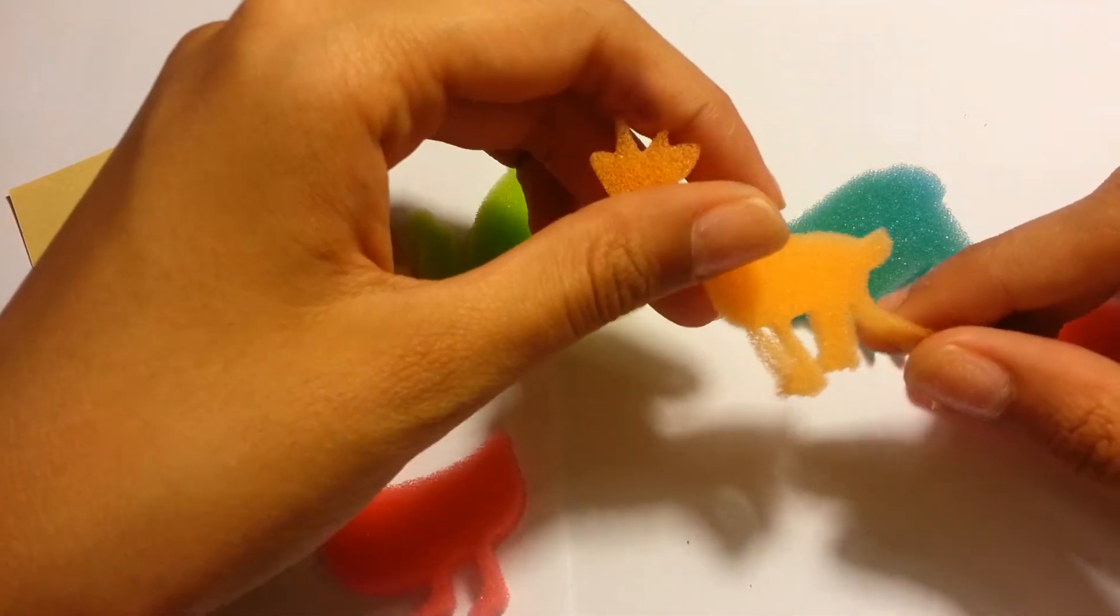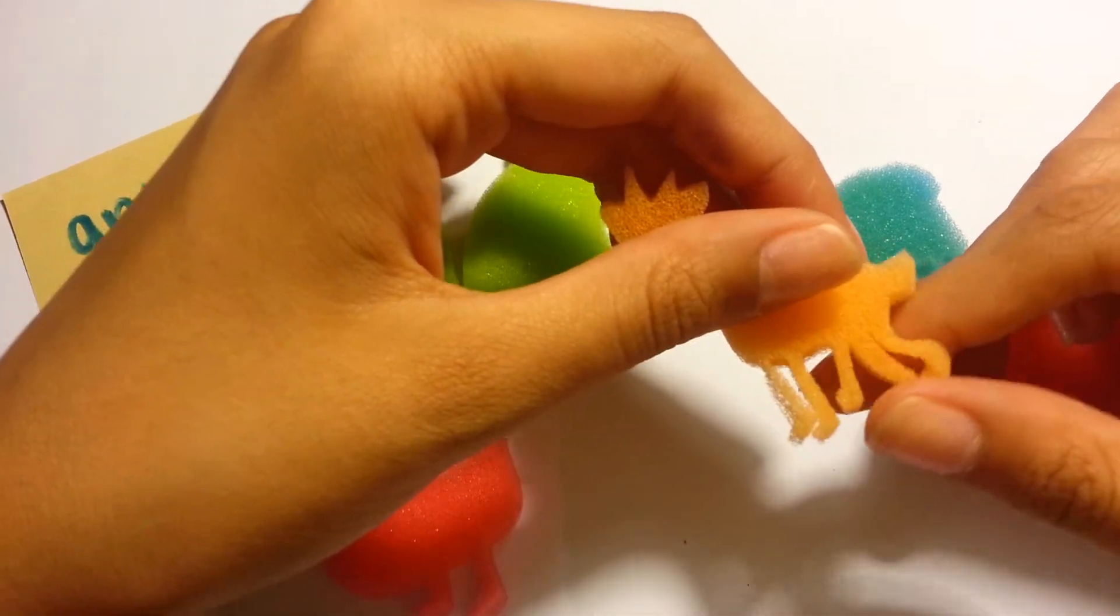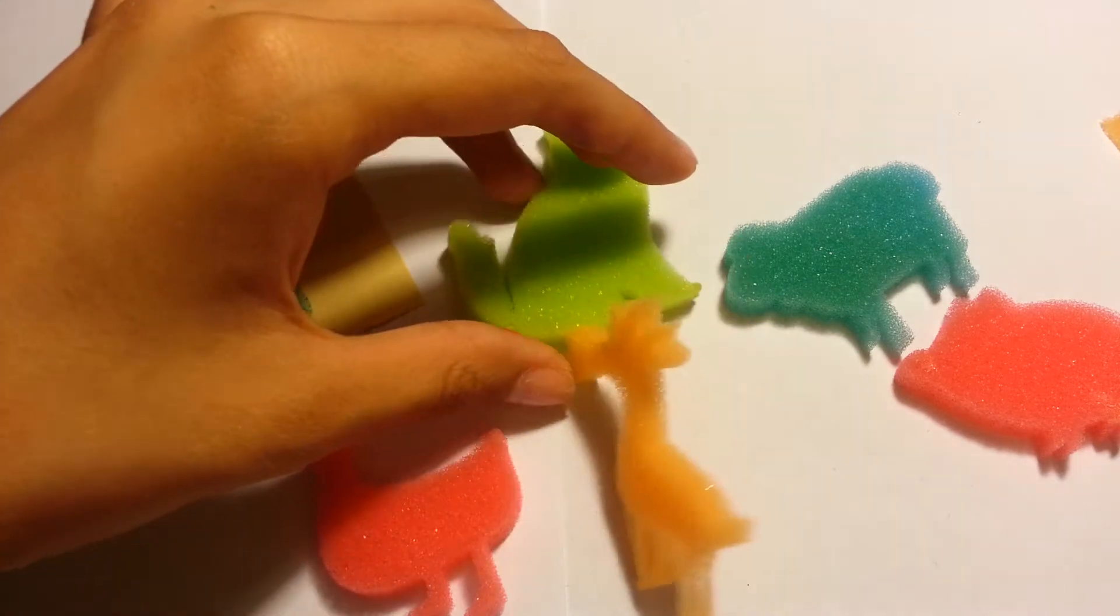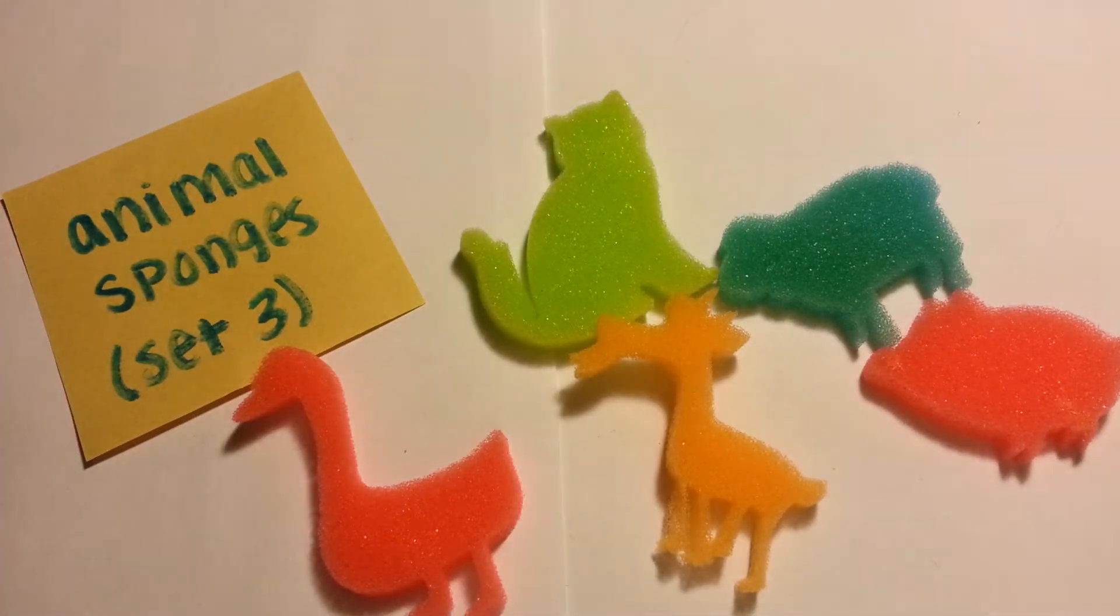I don't know what that is. Let me just take the extra leg. Oh, here it is. This is what comes off. There we go, that looks better. Now he doesn't have five legs, he has four. So yep, there's the animal sponges set three.